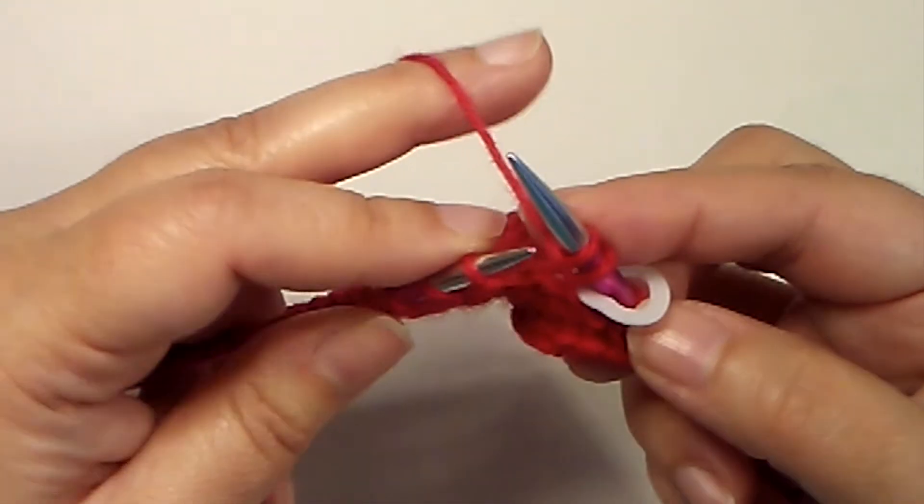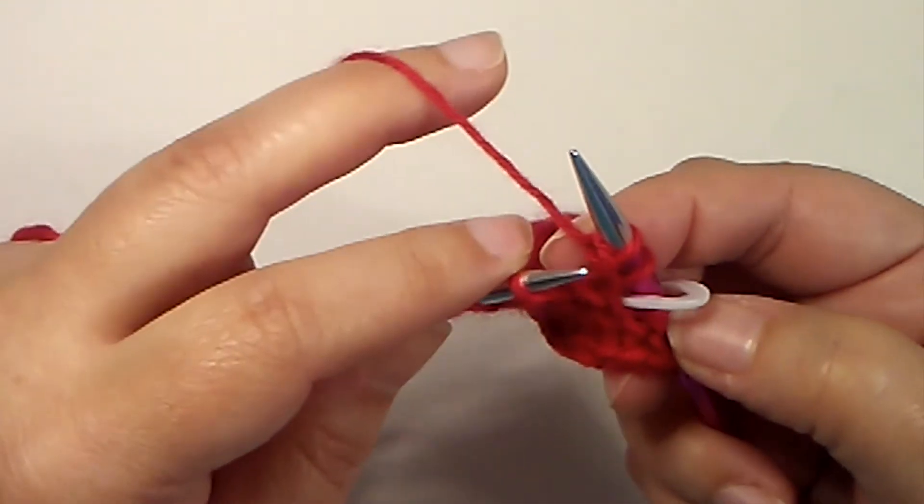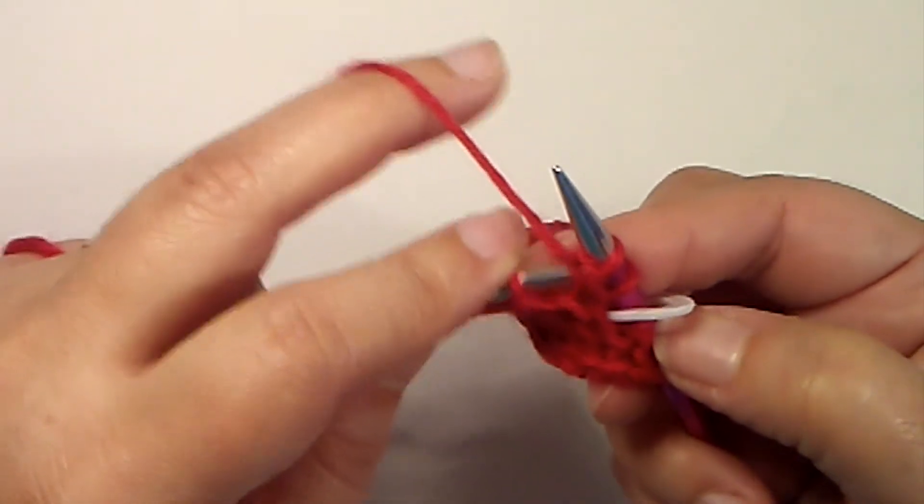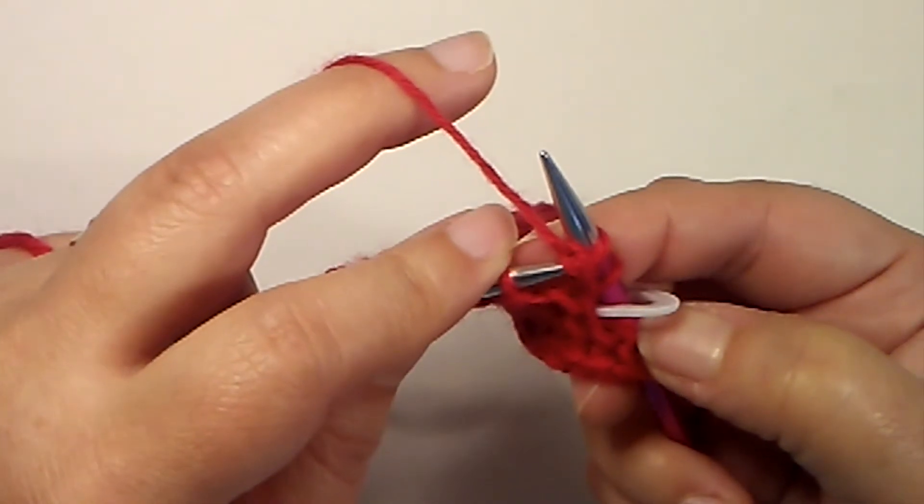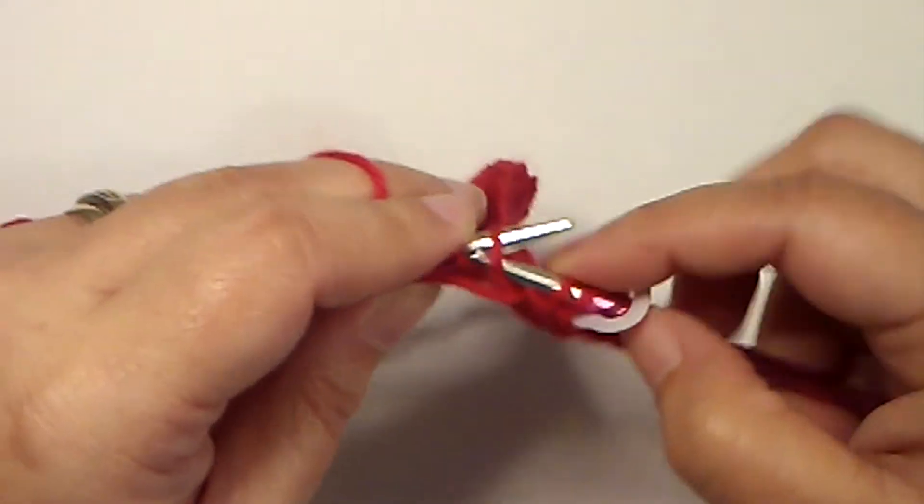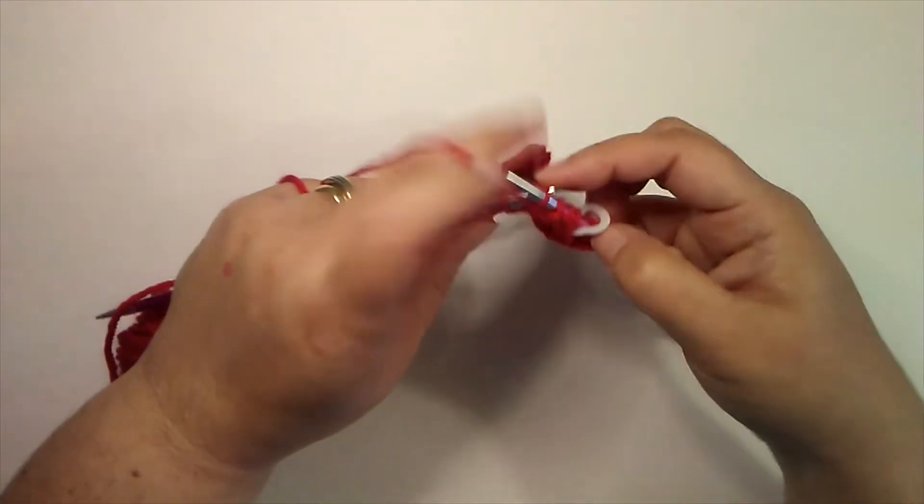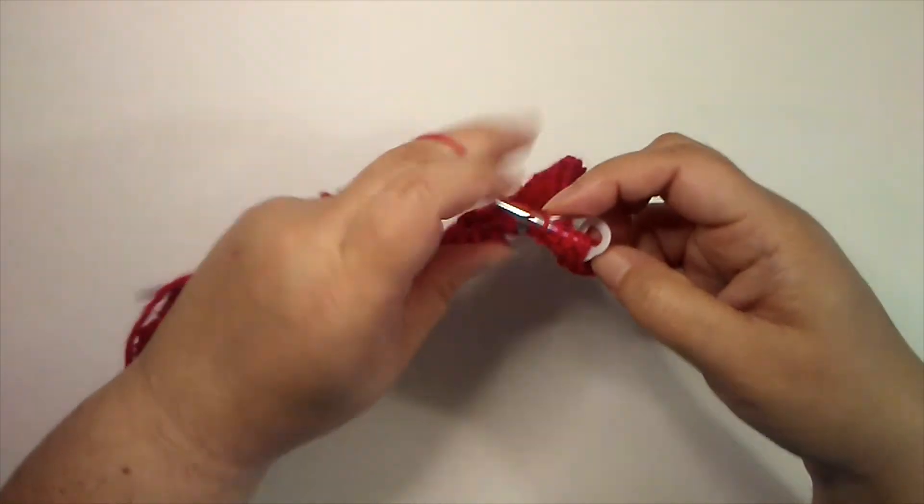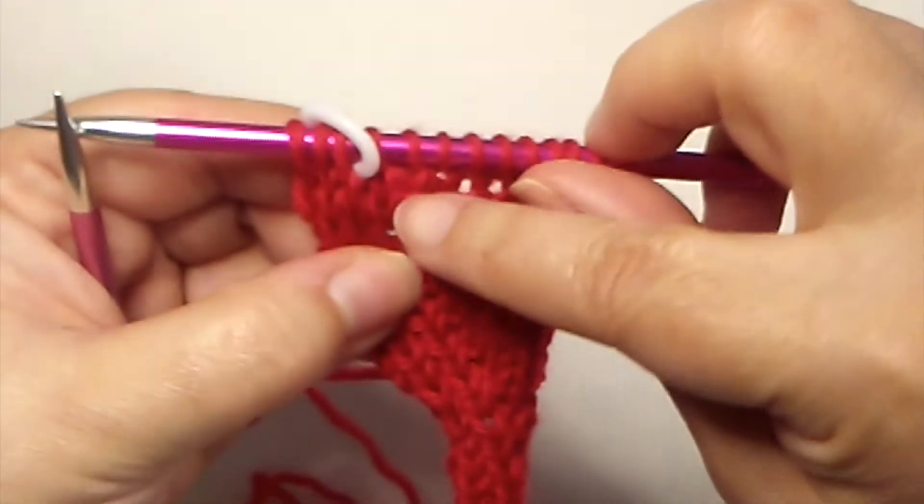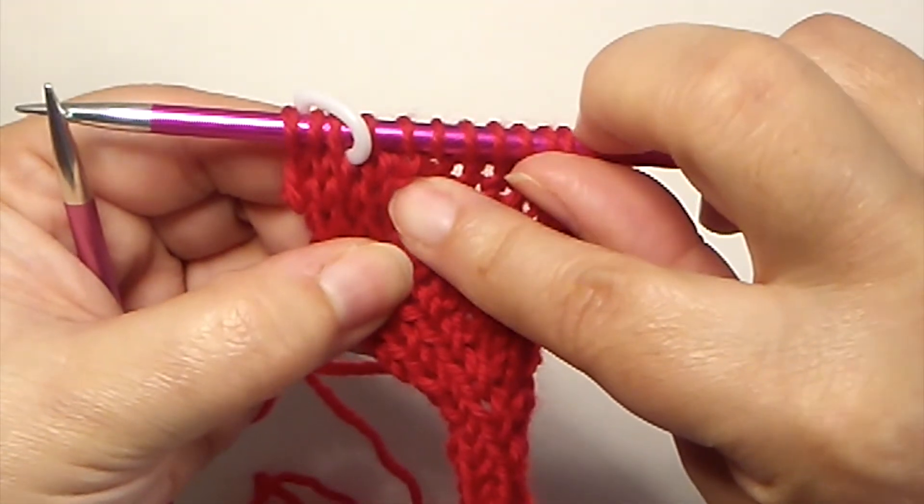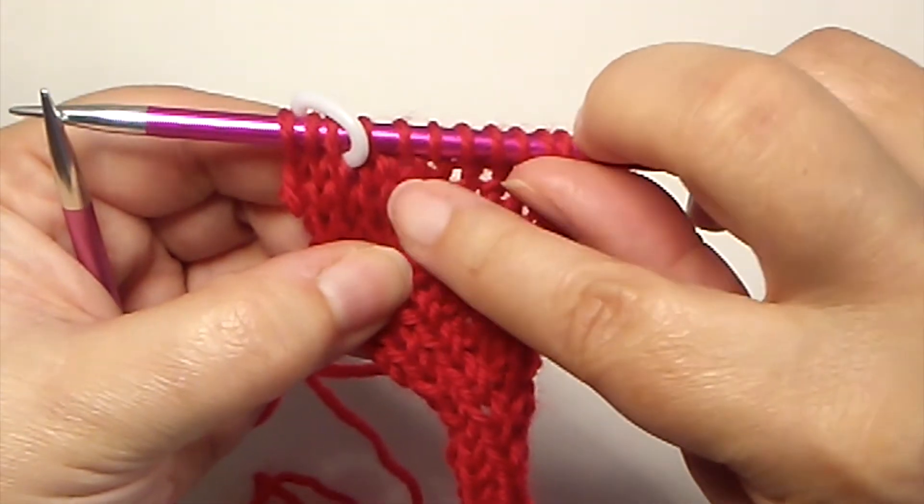By doing that extra stitch, it puts this little bar right there that we'll see on the front of the work. Let's purl across the row and we'll see what that looks like on the other side. There is where we added our increase—you can see the little bar, and there's that increase row right there.